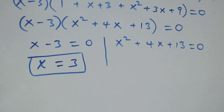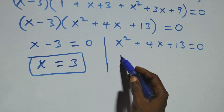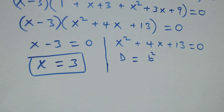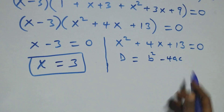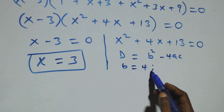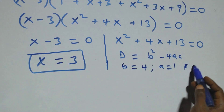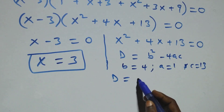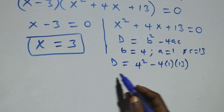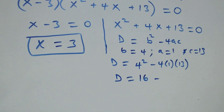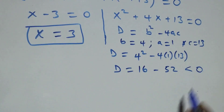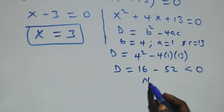Let's check if x has a real solution using the discriminant, which equals b squared minus 4ac, and this should be greater than 0 if it has a real solution. Here b equals 4, a equals 1, and c equals 13. So discriminant becomes 4 squared minus 4 times 1 times 13, that is 16 minus 52. This is obviously less than 0, that is we have no real solution on this side.